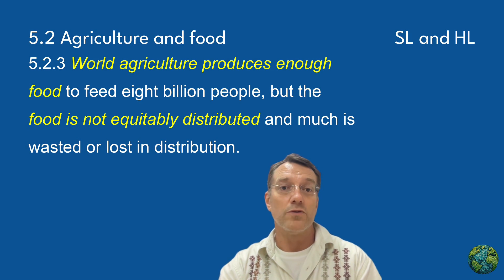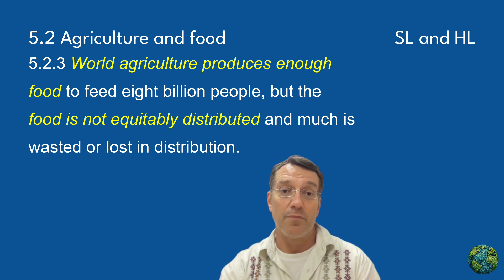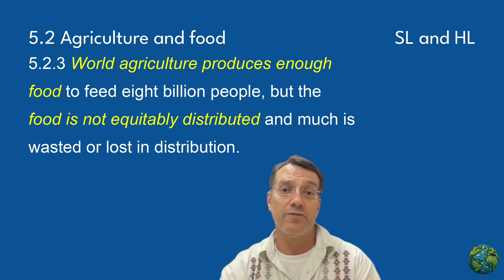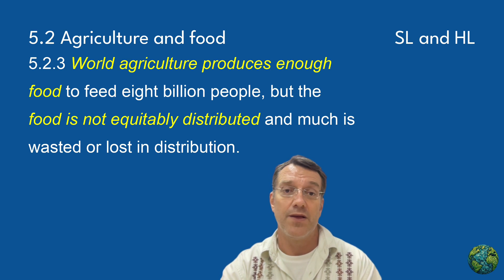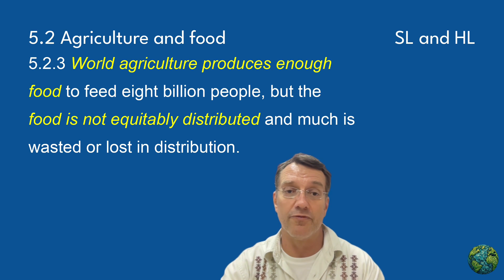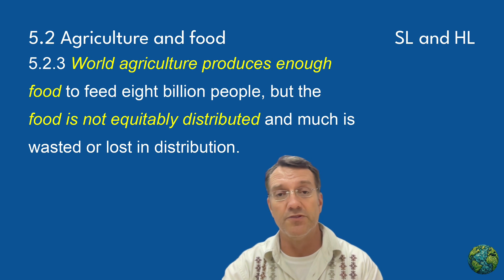Here's some encouraging news: world agriculture actually produces enough food to feed 8 billion people. The problem isn't total production — the problem is that food isn't distributed equally, and that massive amounts of it are wasted or lost during distribution. This is an important distinction because it means our challenge isn't just about growing more food, but about creating more efficient and more equitable food systems.